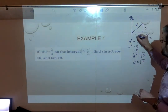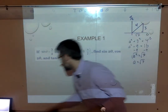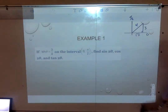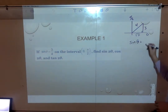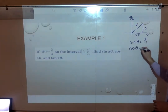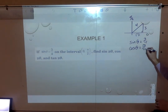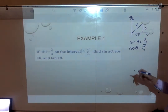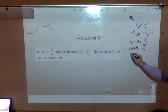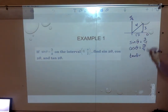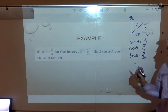So the missing side is root seven. Some important information for this problem: cosine of theta is root seven over four. Tangent could be useful — it's opposite over adjacent, which is three over root seven. You could rationalize it, but I'll leave it like that and only rationalize if needed.